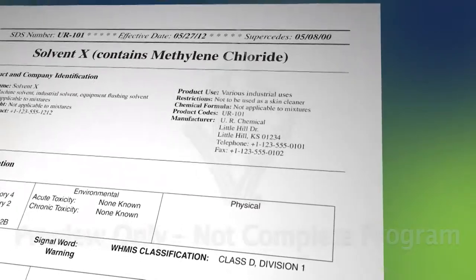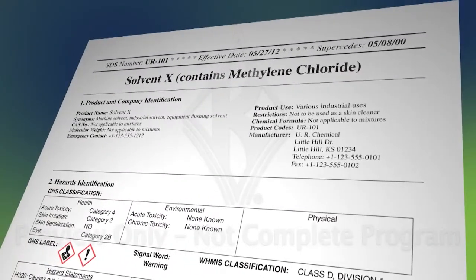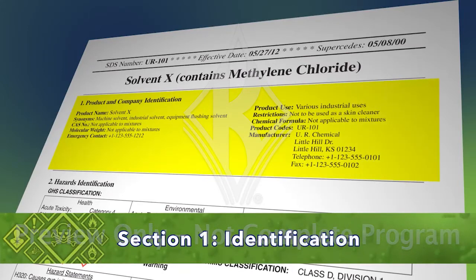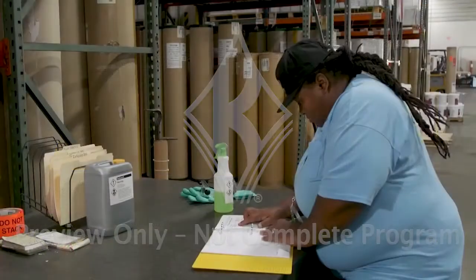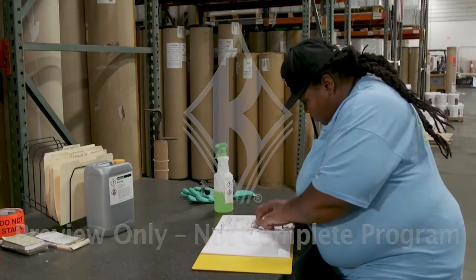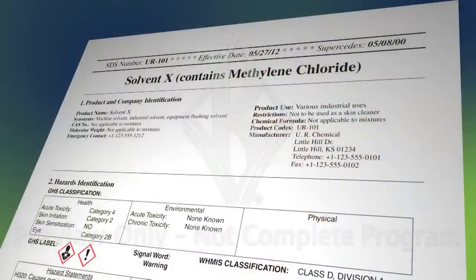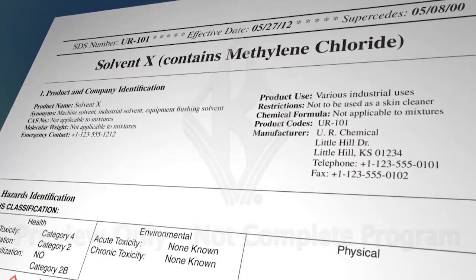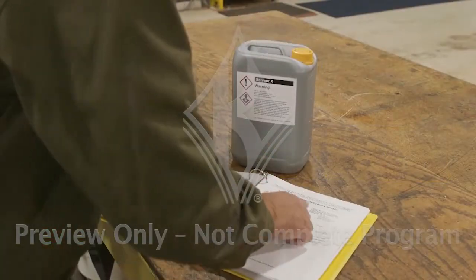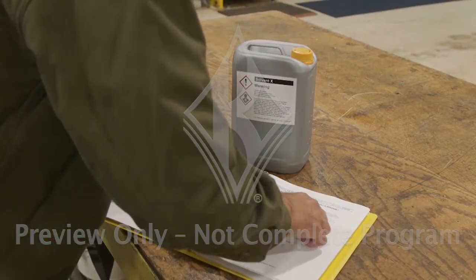Safety data sheets follow a standard 16-section format. Section 1 provides the product identifier and helps you identify the product. It provides the product identifier, which must match the SDS, and includes the official name of the chemical as well as any other names. It also shows the manufacturer, importer, or other responsible party information, including the name, address, phone number, and emergency contact information. You'll also find the recommended uses of the chemical and restrictions on its use here.